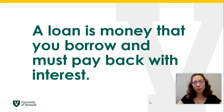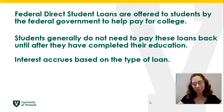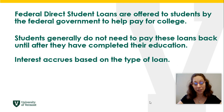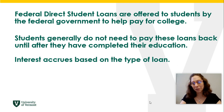If you need to borrow money for college, you'll likely need to take a loan. A loan is money that you must pay back with interest. Federal Direct Student Loans are offered to students by the federal government to help you pay for college. Students generally do not need to pay these loans back until after they've completed their education. The type of interest that accrues is different based on the type of loan that you take.